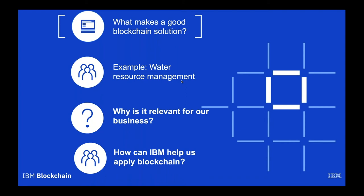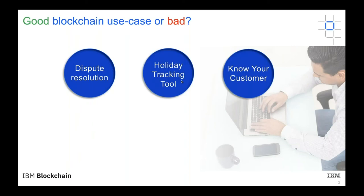The first topic is what makes a good blockchain solution. I picked a number of examples — dispute resolution: if you're handling a dispute with two or three people, as we mentioned previously, there must be a business network, so if it entails more than two people there is a need for a trusted record of what was said and done. An only-tracking tool might not be a good use case, as it's only for the person managing their trips. Know your customer is really good because if you want to know your customer and verify their passport, there's an entity that produced that passport which must be trusted — it entails more than one participant, so know your customer is a perfect use case.